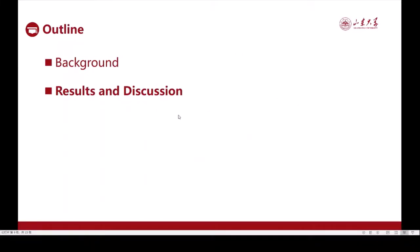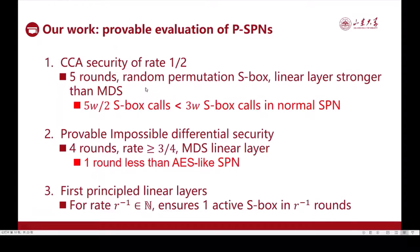Let's now see our results. We prove CCA security for partial SP networks with rate 1 divided by 2, and security against impossible differential attacks for 4 rounds when the rate is at least 3 quarters. Finally, we provide the first principled linear layers that ensure a tight number of active S-boxes in differentials.